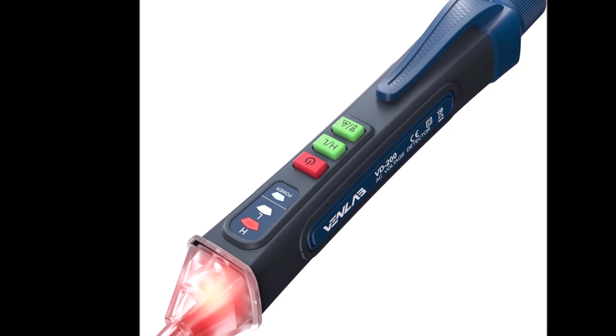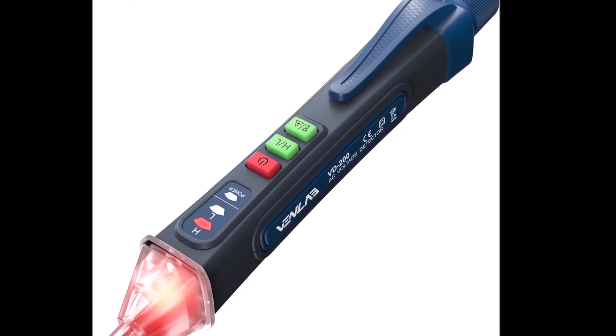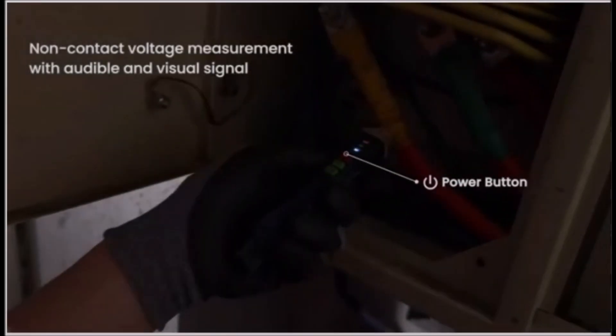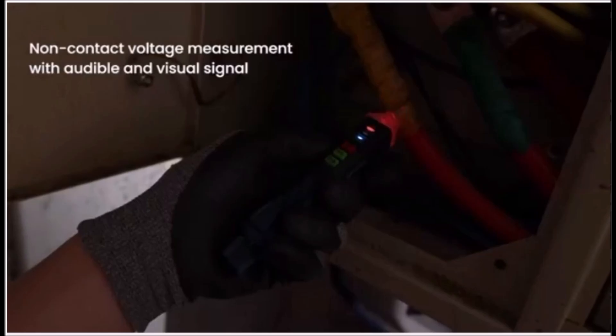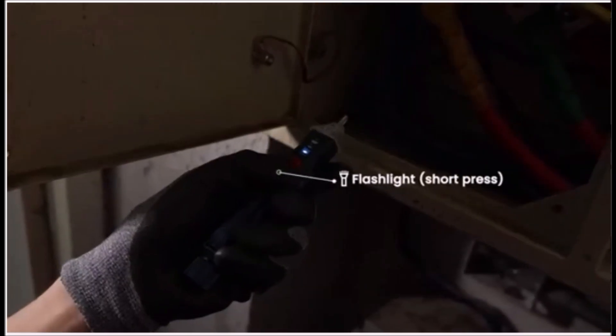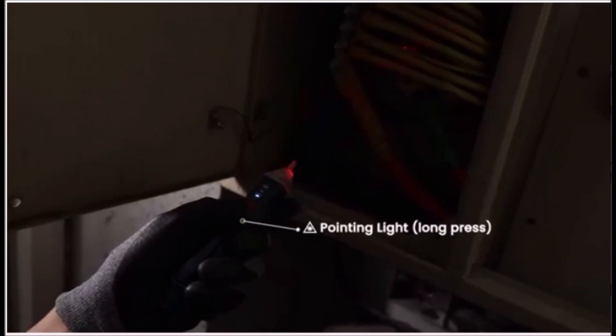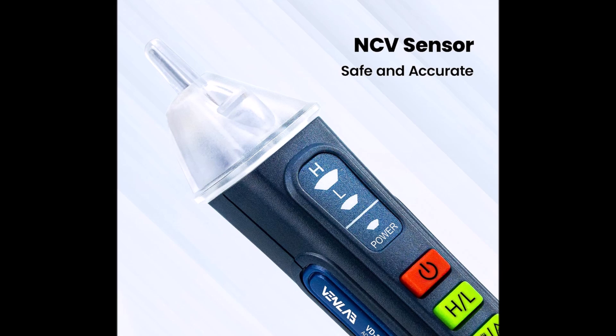Number ten. This non-contact voltage tester offers a safe and efficient way to detect live wires without direct contact. It's designed to identify electrical current in outlets, switches, cables, and fixtures that may have stopped working. The dual-range sensitivity lets users switch between high and low modes depending on the voltage being tested, covering 12V to 1000V. Visual and audible alerts make detection clear.